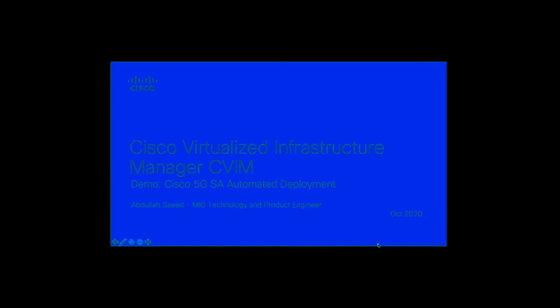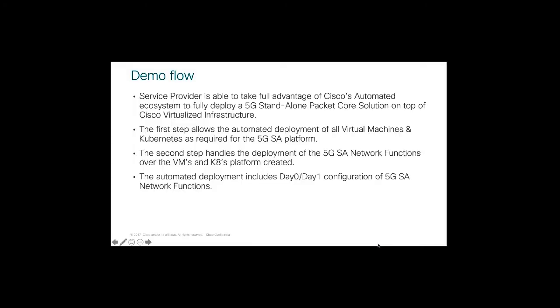Hello everyone, this is Abdullah Saeed, and today we will cover how to utilize Cisco Virtualized Infrastructure Manager (CVIM) to deploy Cisco 5G Standalone Packet Core. This demo will show how to take full advantage of Cisco's automated ecosystem to fully deploy 5G Standalone Packet Core on top of the OpenStack layer created by CVIM, including creation of virtual machines, Kubernetes cluster, 5G network functions, and all Day 0 and Day 1 configuration.